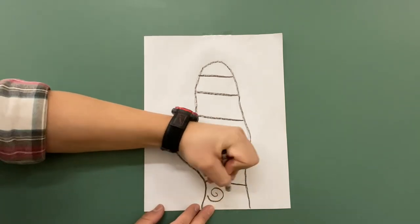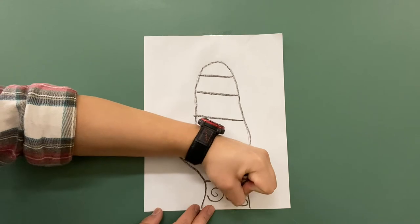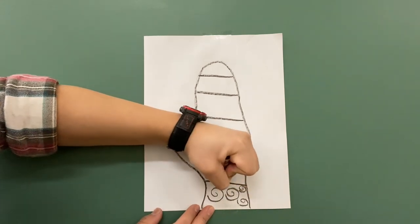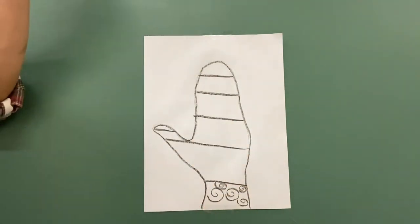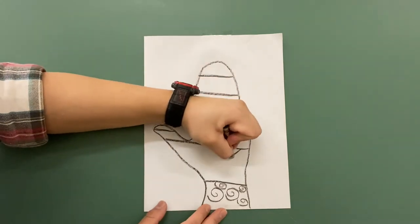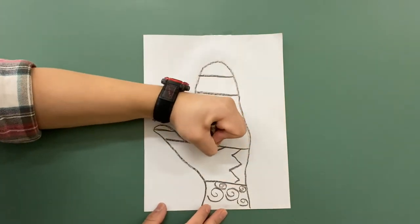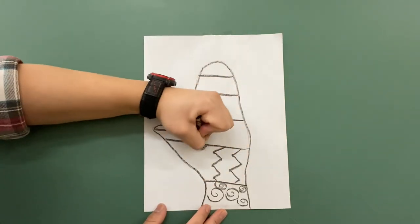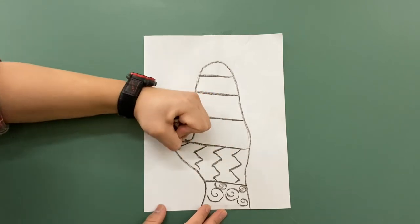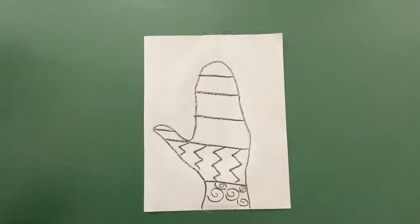Next we're going to start to make the lines inside the mitten. Draw some spiral lines here. You can even make smaller ones to fit inside. And then we're going to make zigzag lines here. Sort of like lightning bolts. But they won't electrocute you, which is a good thing.